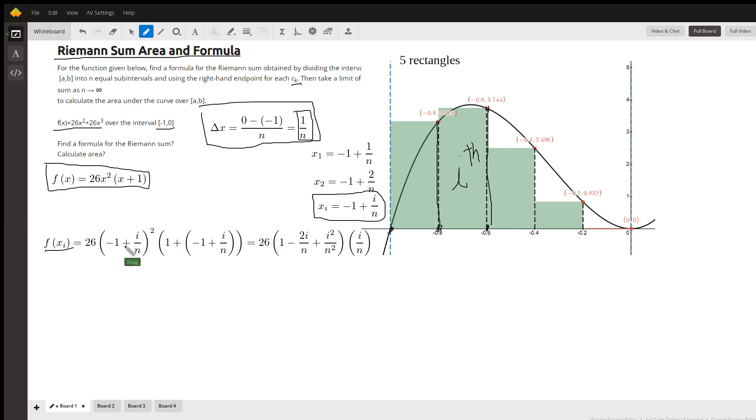Here's 26, here's x² because that is the right-hand endpoint of the ith rectangle, and then we multiply that by x + 1, or 1 + x_i. You can see these 1 and negative 1 combine to 0, so it's 26 times this binomial squared. There's the binomial squared times i over n. That's a formula for the height of the ith rectangle.